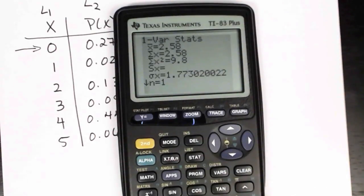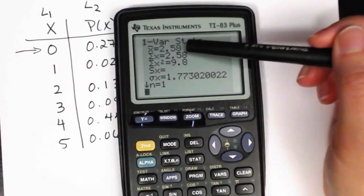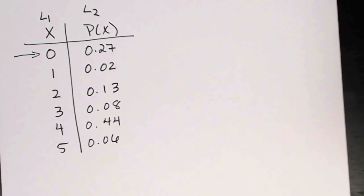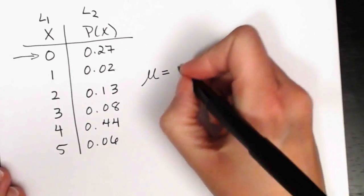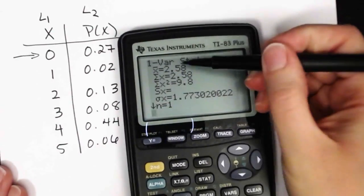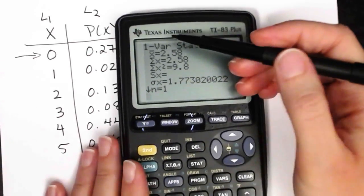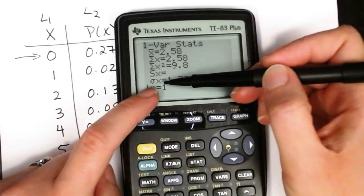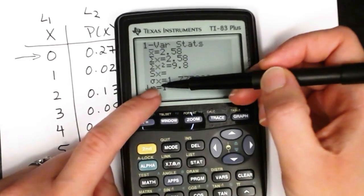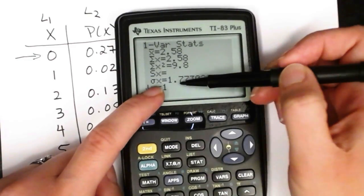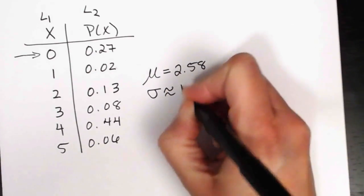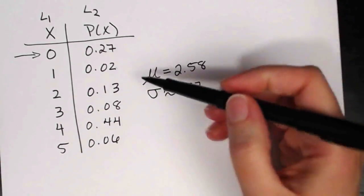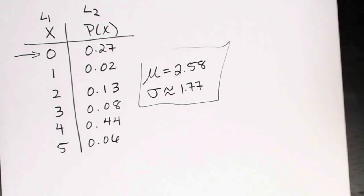Press enter. This value here — the x-bar — is your mean of the probability distribution, though your calculator always labels it as x-bar. This actually represents population data, so you'll want to make sure it gets labeled as mu. For this data, it came out to 2.58. Your standard deviation is shown below — the calculator is smart enough to recognize this is population data and gives you the population standard deviation, which is about 1.77. So our mean is 2.58 and standard deviation is 1.77 for this probability distribution.